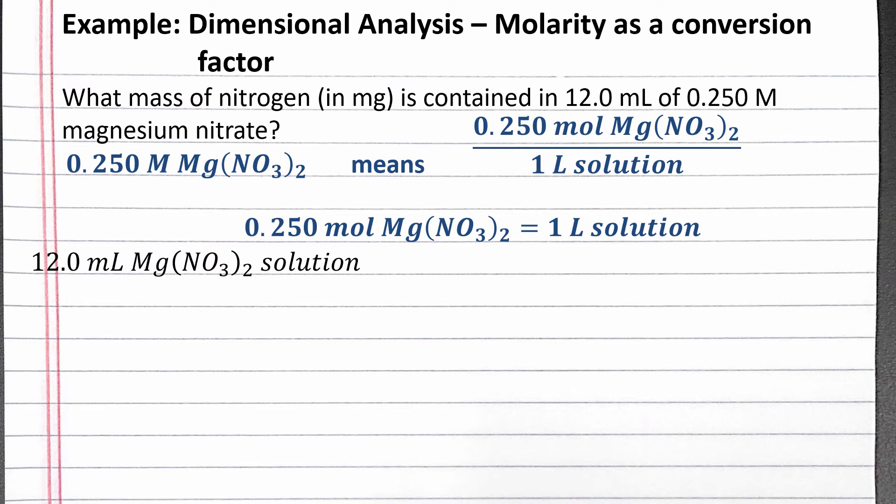We'll need to convert our units to milligrams of nitrogen. Using the definition of milli, we can convert from milliliters to liters of solution. One milliliter equals 10 to the negative third liters.